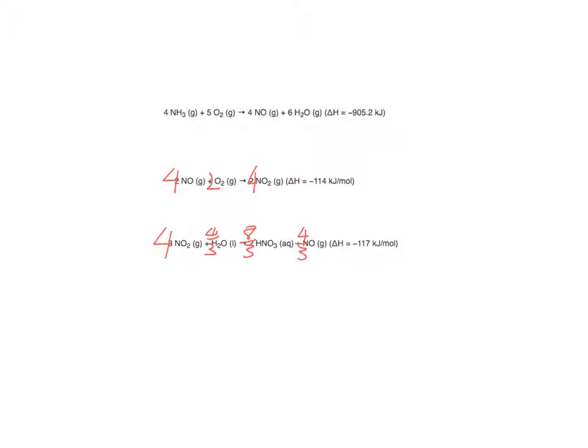And once we've multiplied that whole equation by one and a third, or by four thirds, we get this equation here. So now this tells us that the four moles of ammonia we began with will eventually become eight on three moles of nitric acid, or two and two thirds. So our ratio is four moles of ammonia to produce two and two thirds moles of nitric acid.